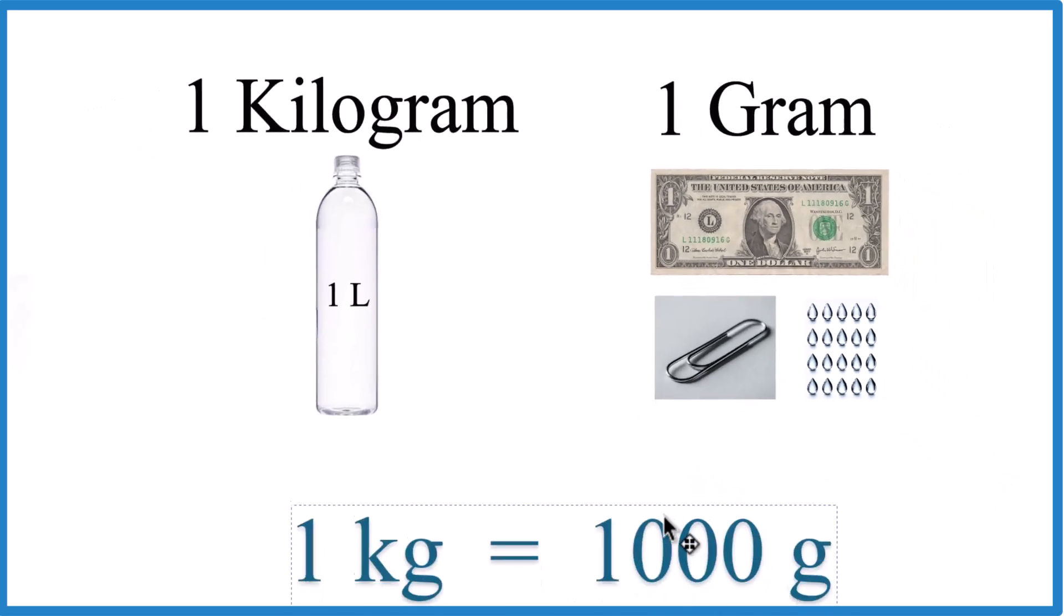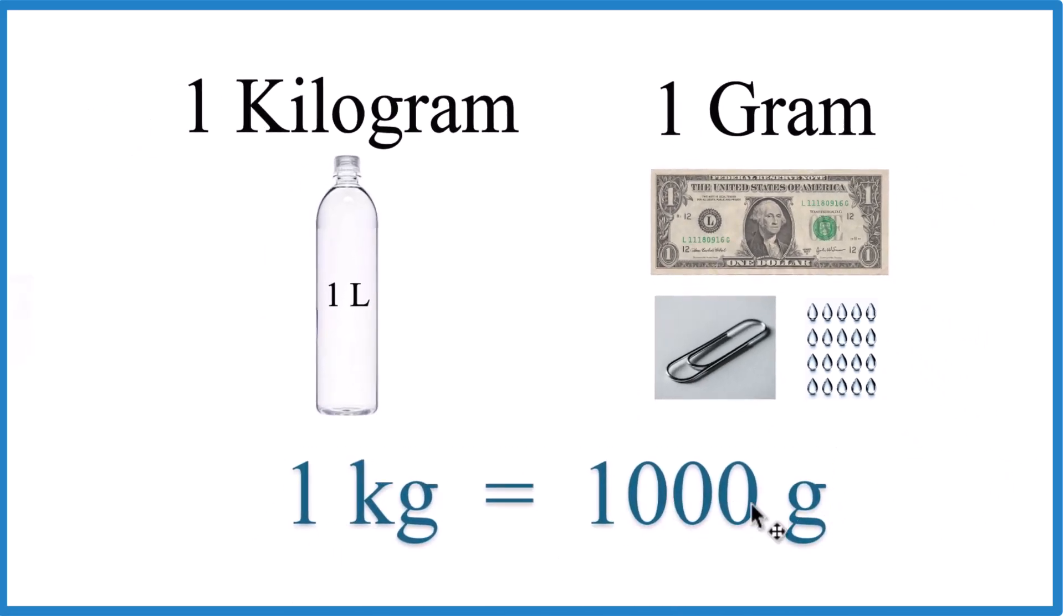And to be exact, one kilogram is a thousand grams. Kilo means a thousand. This is something that you must memorize if you're going to be able to convert from kilograms to grams and back.